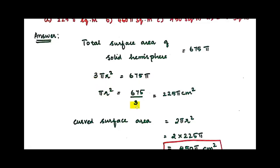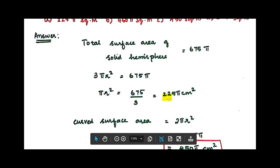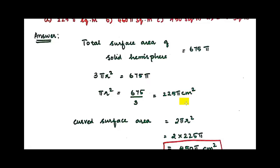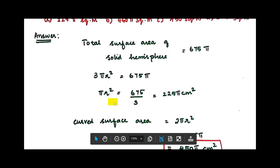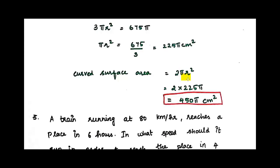So πr² equals 225π, which means r² equals 225. The curved surface area formula is 2πr². So the curved surface area equals 2 × 225π, which is 450π cm².